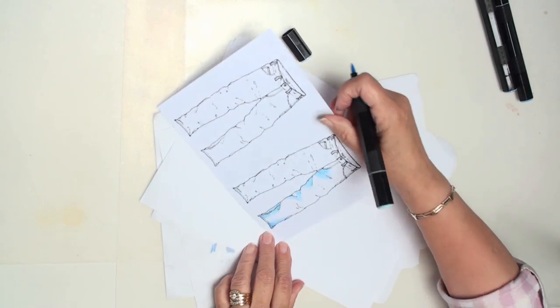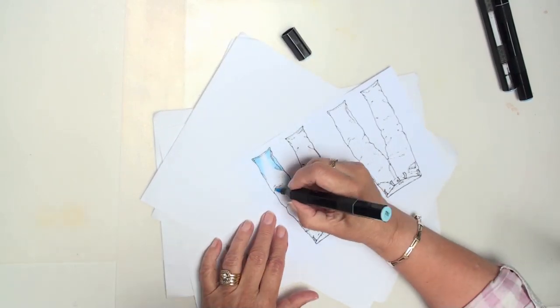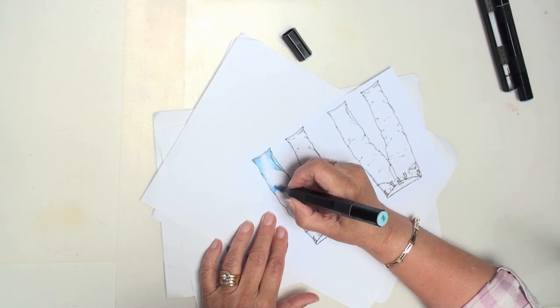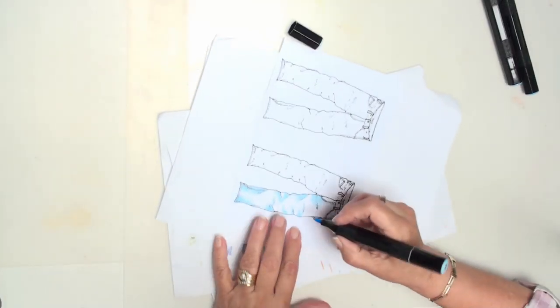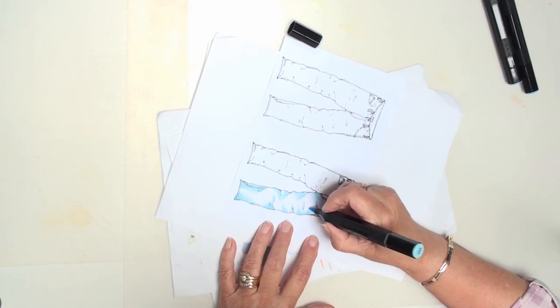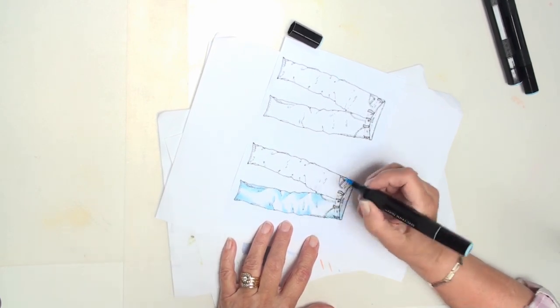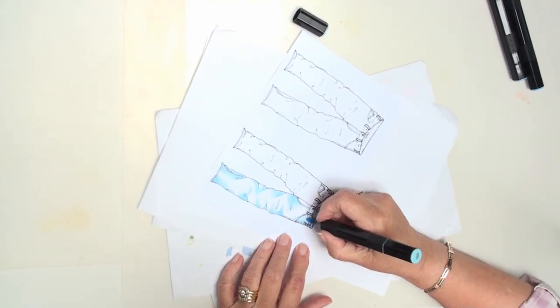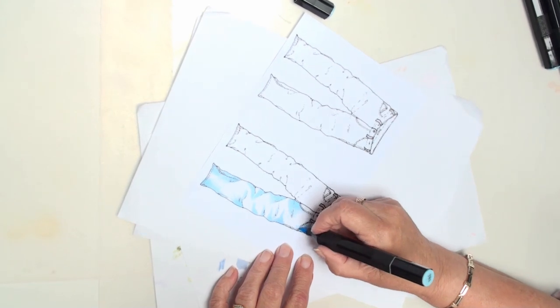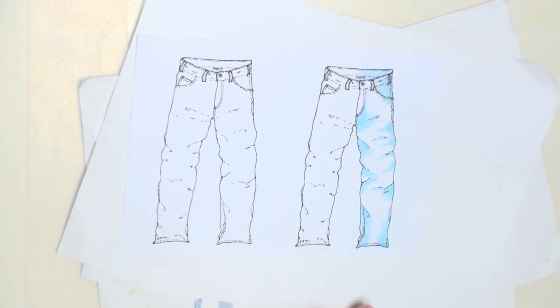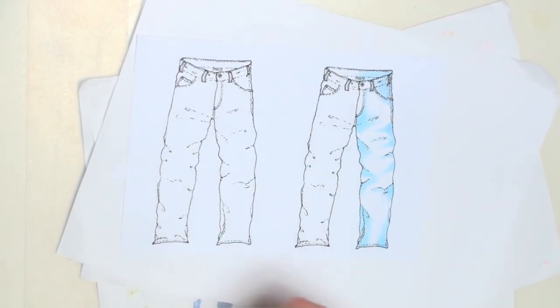And the card that I'm using is Neenah Classic Crest. So I'm adding in all the side shadows and where the fabric would fold. And this is where the fabric would drape down from the hip. So there we've got the first layer of where I want to map things out.